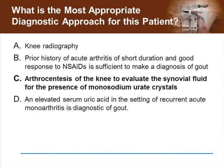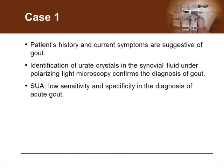The most appropriate diagnostic approach for this patient with monoarticular arthritis is arthrocentesis of his knee to evaluate the synovial fluid for the presence of monosodium urate crystals. The patient's history and current symptoms are very suggestive of gout. However, identification of urate crystals in the synovial fluid under polarizing light microscopy is the gold standard for confirming the diagnosis of gout, as it will differentiate gout from calcium pyrophosphate dehydrate-associated arthritis and other causes of acute arthritis. Because of its low sensitivity and specificity, the serum uric acid level should not be used to confirm or exclude gout.